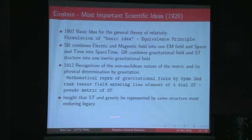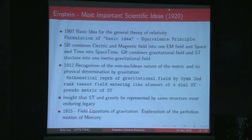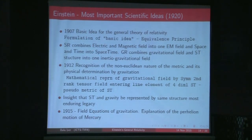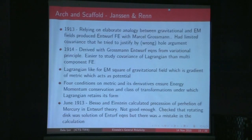By 1912 he started realizing that the non-Euclidean nature of the metric was an important ingredient, and he tried to describe it using a second-rank tensor in four-dimensional spacetime. The pseudo-metric of spacetime would be the basic description of the gravitational field. The insight that spacetime and gravity should be represented by the same structure was the most enduring legacy of Einstein. In 1915 he came to the field equations of gravitation, with which he could explain an outstanding problem that had persisted for many decades.